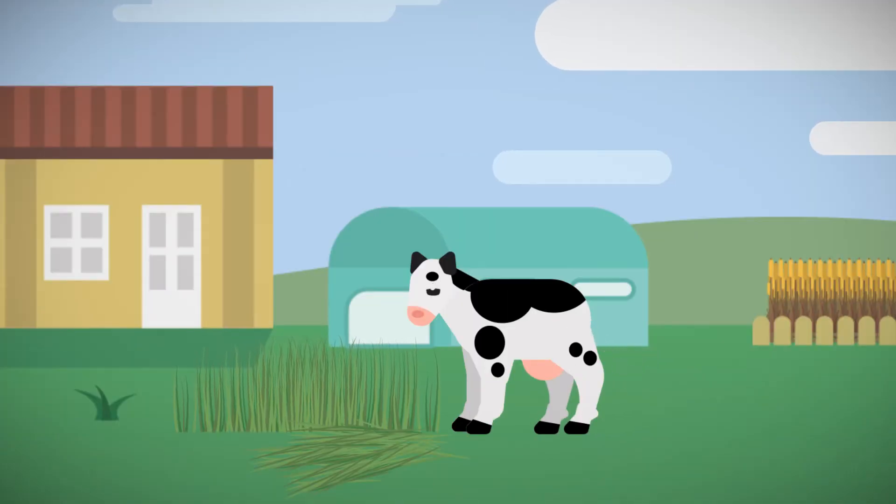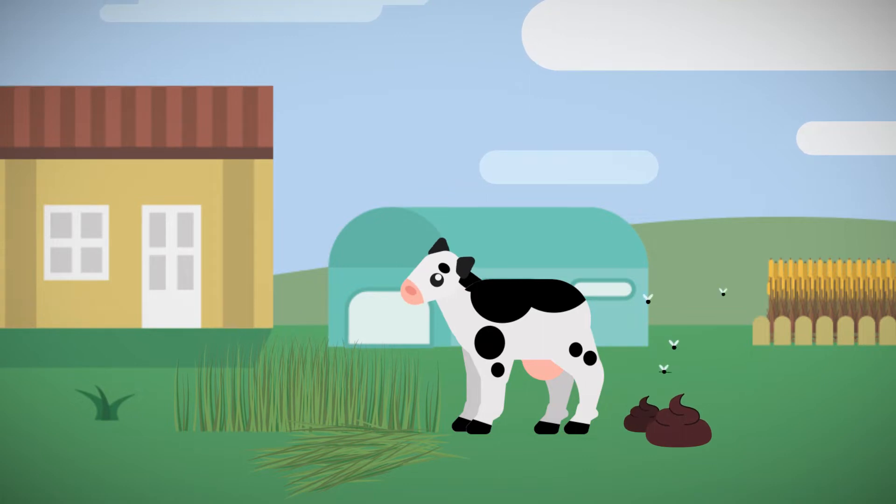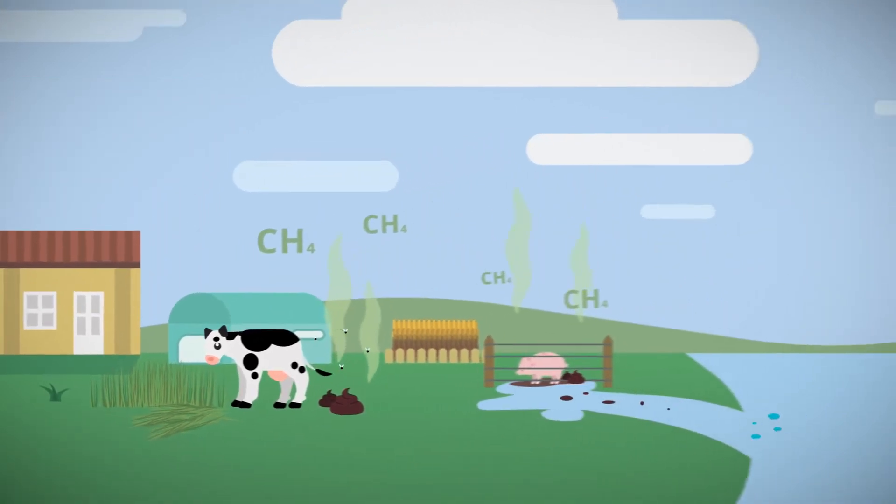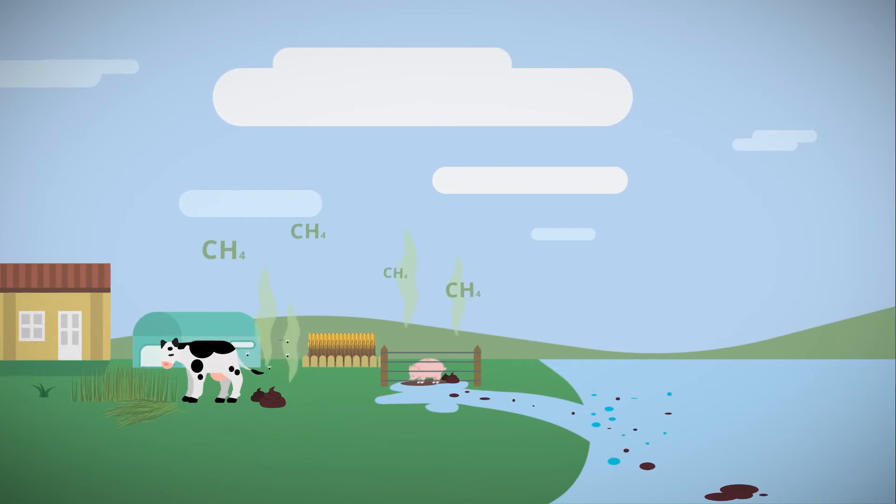Livestock farms can collect a lot of waste that smells bad, attracts insects, reproduces germs, pollutes water, and produces greenhouse gases. In other words, waste can be a serious problem for farmers and the planet.